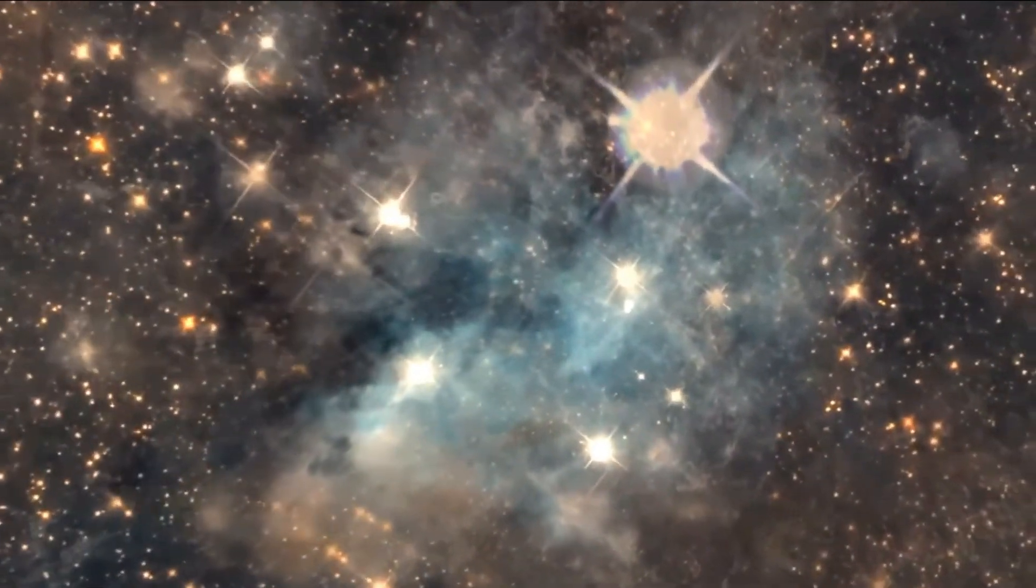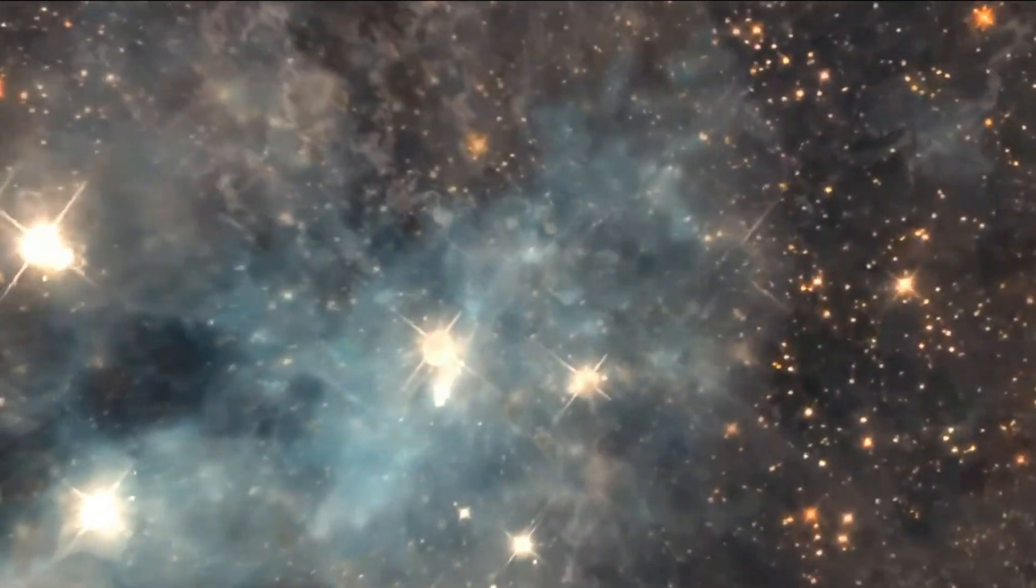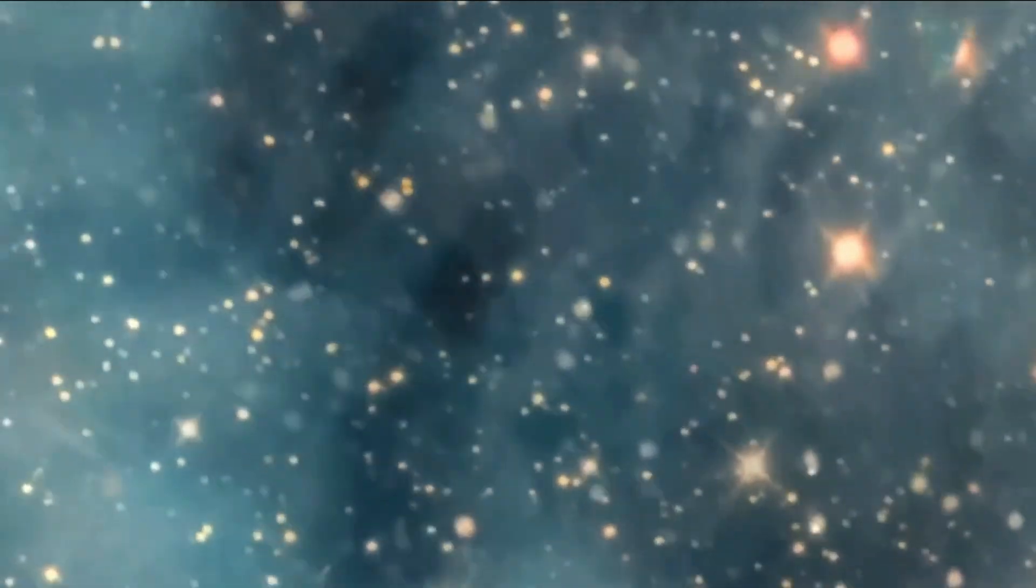Reflection nebulae reflect visible light from nearby stars or the stars they contain. The dust has the distinction of reflecting blue color. The nebulae surrounding the Pleiades are excellent examples of this type of blue nebulae.